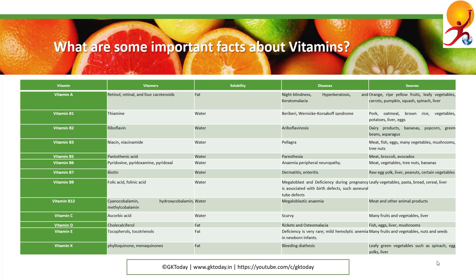Vitamin B2 is riboflavin. It is soluble in water and its deficiency can cause ariboflavinosis and paraesthesia. It is found in dairy products, bananas, popcorn, green beans, and asparagus.